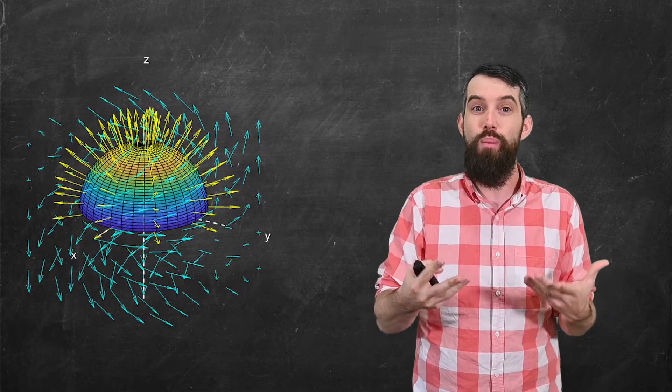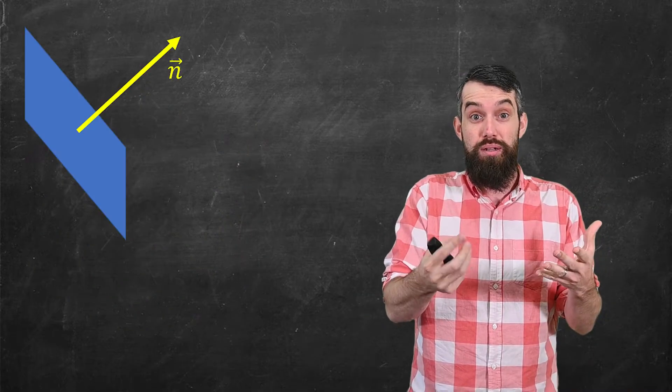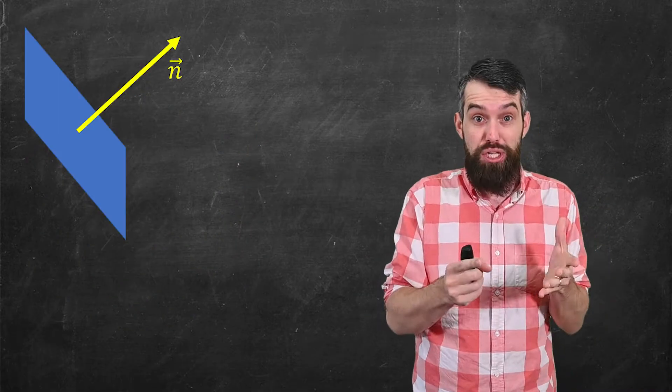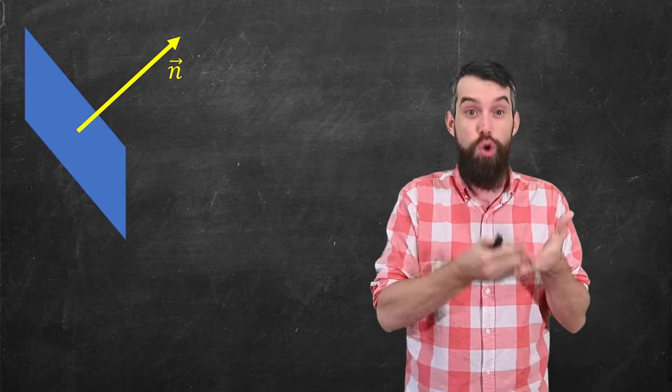The question is, how much is that gas crossing the boundary in this outward direction? So if I zoom in really closely on a small portion of that surface, so I've got the small surface and I've got the normal that I've put here.